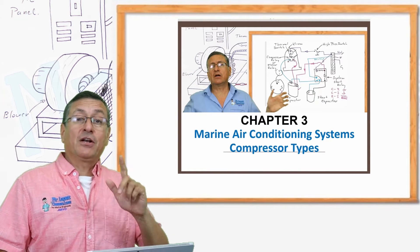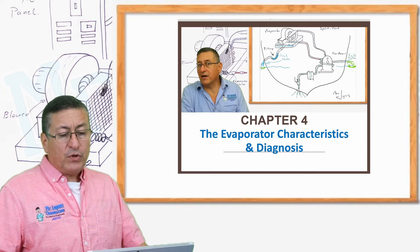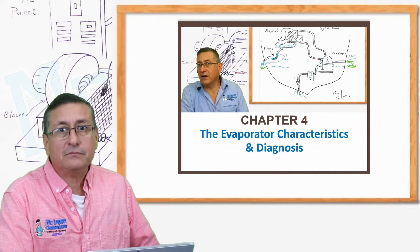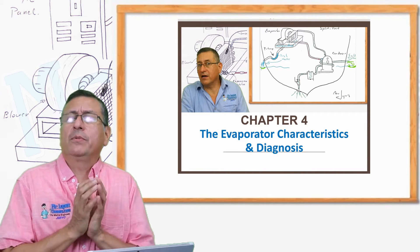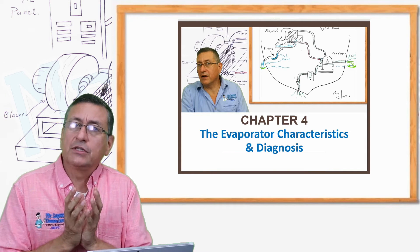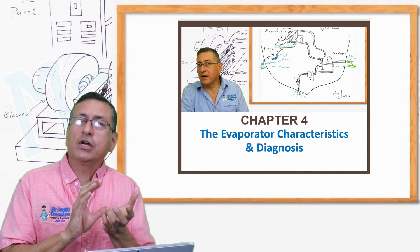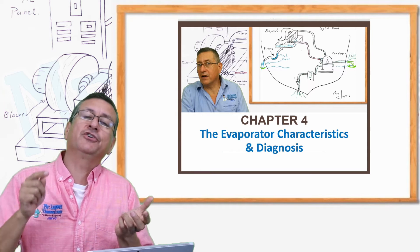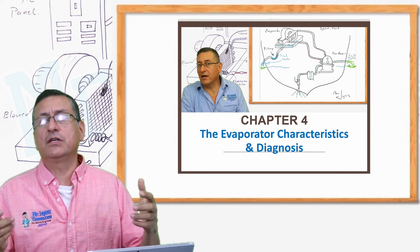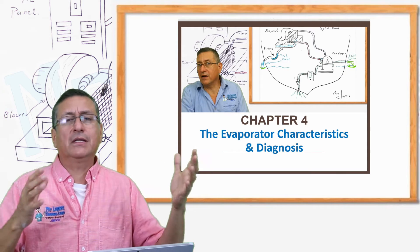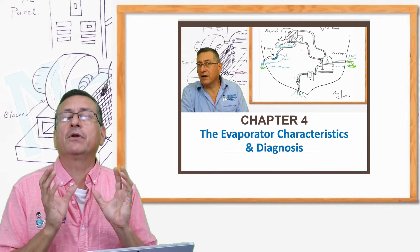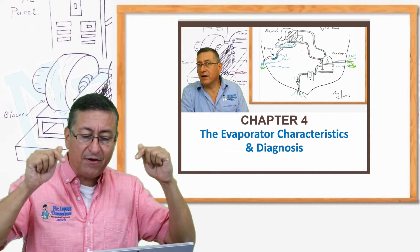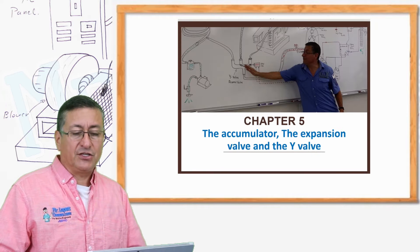This is chapter number three. In chapter number four, we are going to analyze the evaporator — another vital component. We are going to verify the different types of evaporators and how the evaporator works in different types of systems, whether it is a chiller system or self-contained unit. Depending on the system, the evaporators have a little difference. We are going to study the evaporator in this chapter.